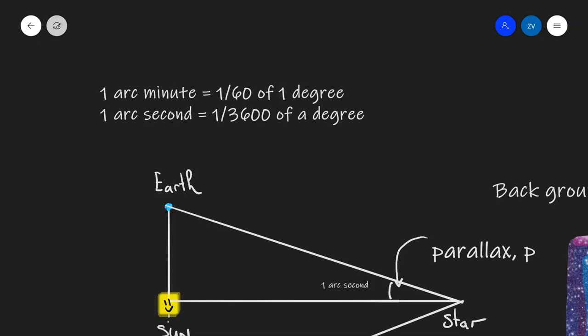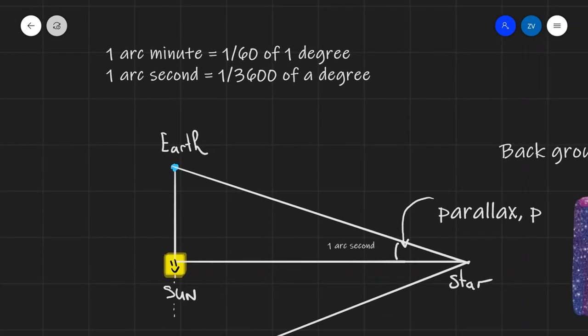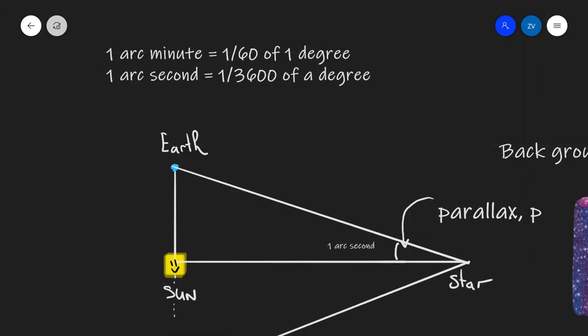Also, let us remind ourselves of some smaller measurements of angles. An arc minute is 1/60th of a degree, and one arc second is 1/60th of that, which brings us to 1/3600th of a degree.